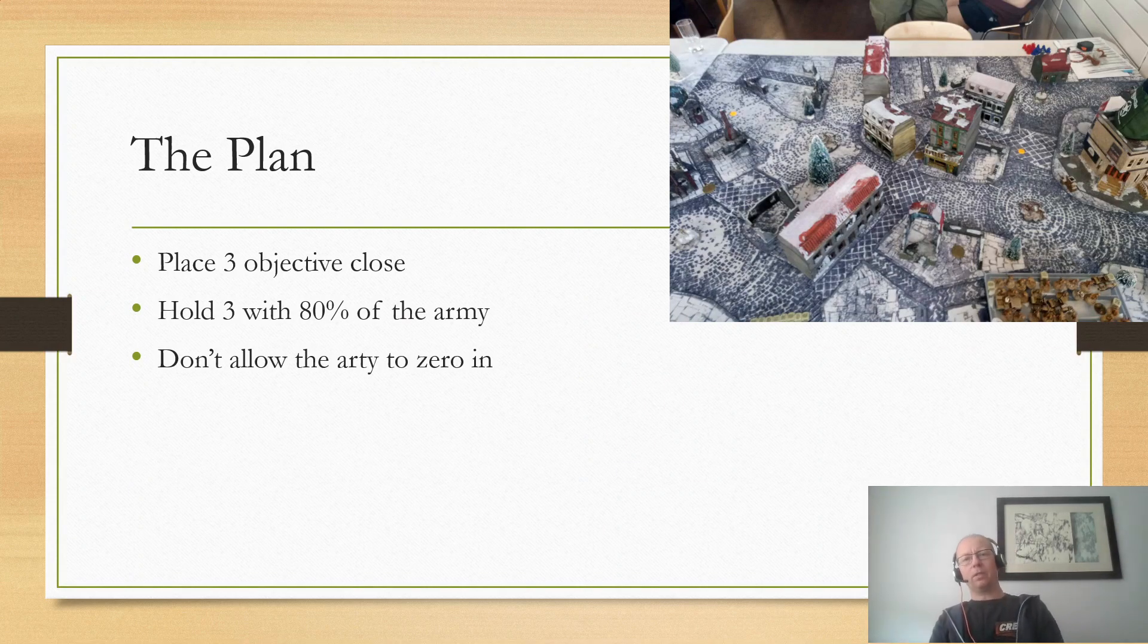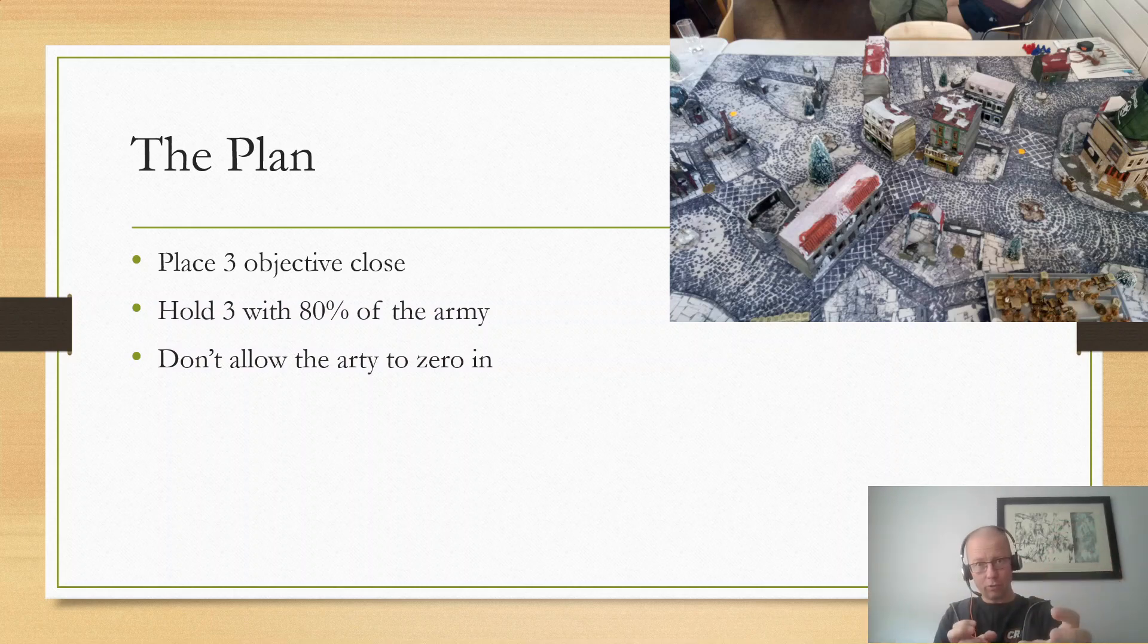Now, the plan was to try and keep three of the objectives close so that my Gurkhas could dominate them, because I knew I could out-assault anything that Bert had. All of his stuff was vulnerable to assaults, even the Hellcat was open-topped. Unfortunately, Bert got to place three objectives, I placed two, which meant I couldn't really decide everything, but I decided enough.